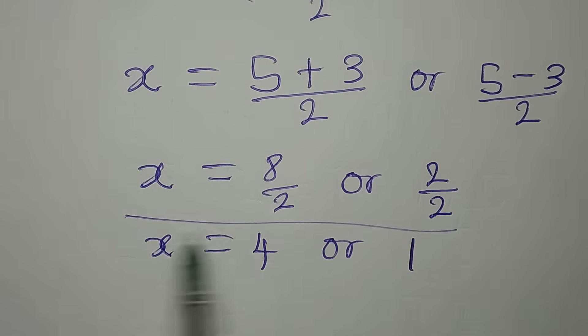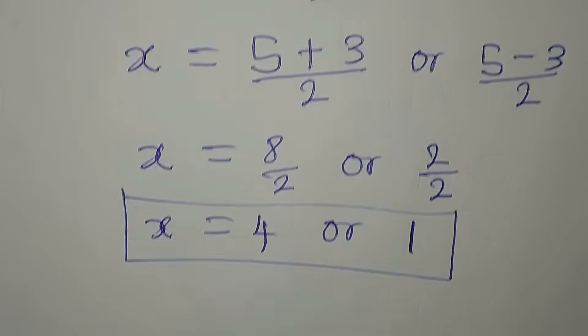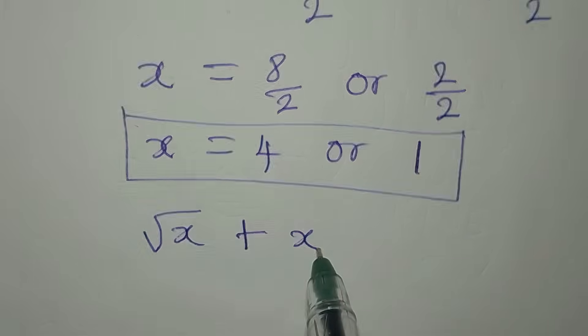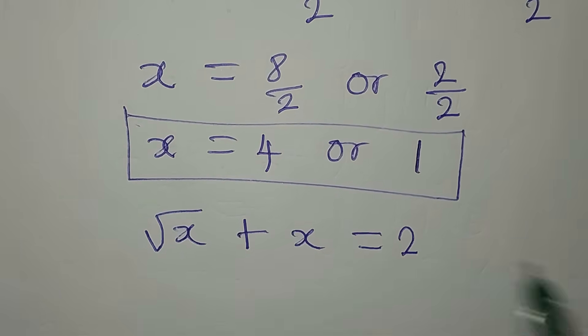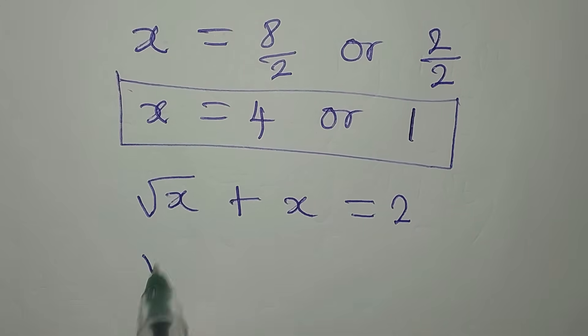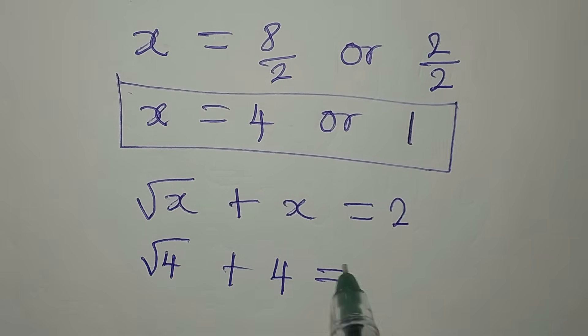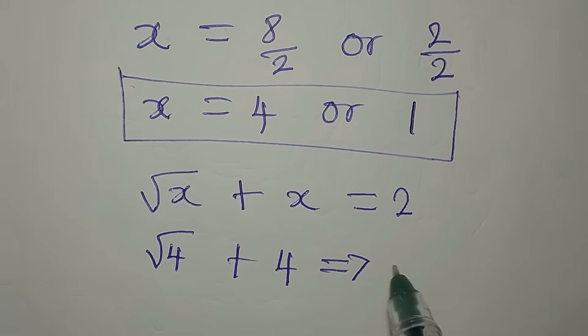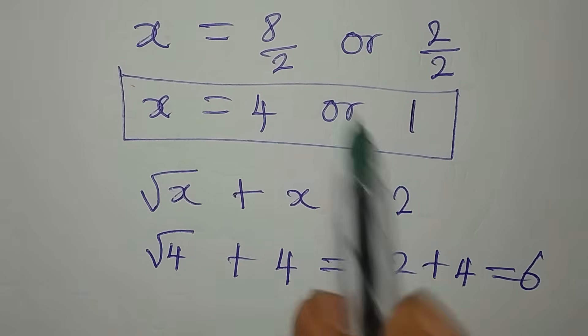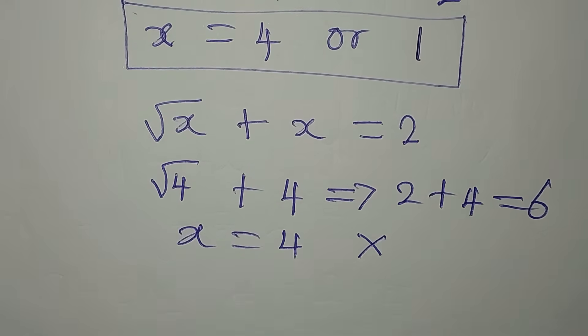But the question is, do you think these values of x will satisfy the equation? What is the equation? The equation is root x plus x equals 2. So we want to verify. If we put the first value of x, it means we'll have root 4 plus 4, which is the same thing as 2 plus 4, and that is 6. This means that x equals 4 does not satisfy, so it has to be rejected.